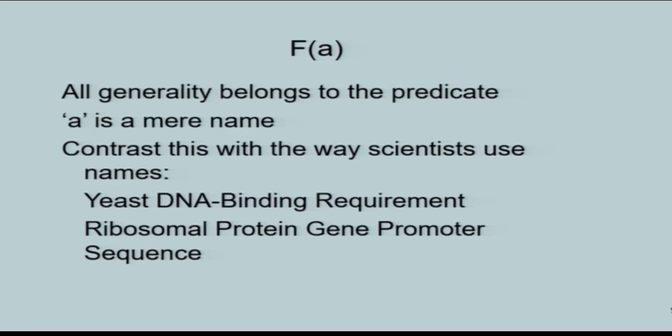One slogan of the phantological kingdom is that all generality belongs to the predicate. Individuals do not have any characteristics intrinsically. Rather, they have qualities, which are captured by predicates. Names should not have any meaning. Donald Trump does not have any meaning. It could just as well be 14763-2. But scientists use nouns all the time, which are full of meaning. And always will do so.